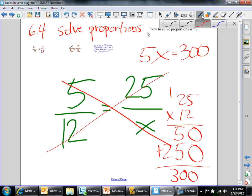Then go ahead and divide both sides by 5, and you end up getting x equals 60.